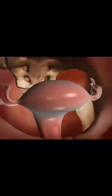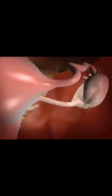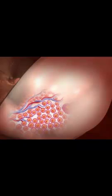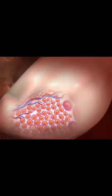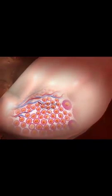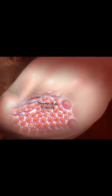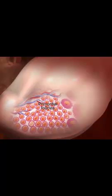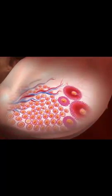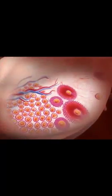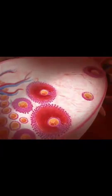At the onset of female puberty, tens of thousands of primary oocytes each form part of a primordial follicle in the ovaries. Between menarche and menopause, each primordial follicle develops into a mature follicle, and its primary oocyte completes meiosis I.